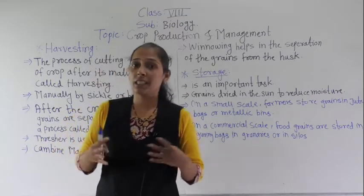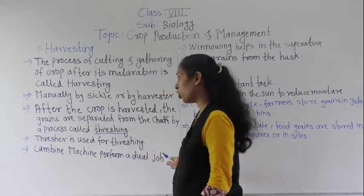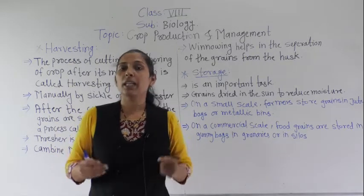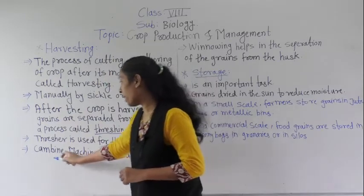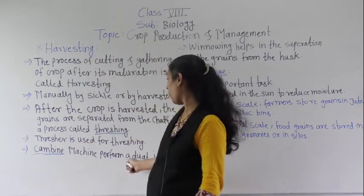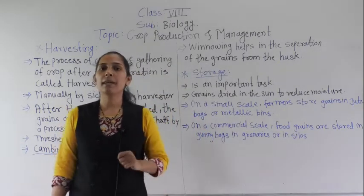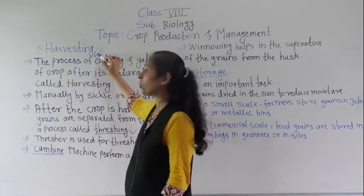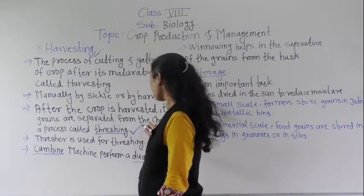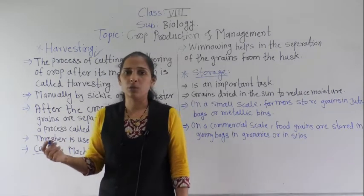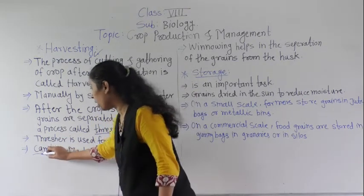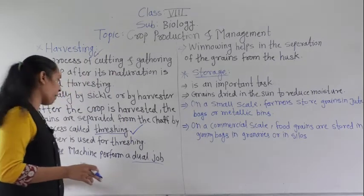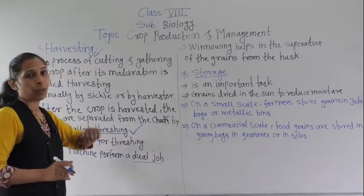If the field is on a large scale, a combine machine performs a dual job. The combine machine can do both harvesting and threshing. It cuts the crops and also separates the grains from the chaff. Because it does both jobs, it is called a combine.